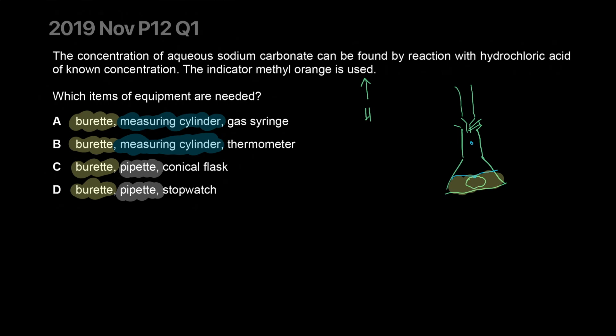The color won't change until all of the sodium carbonate is gone. The sodium carbonate is aqueous - it's a solution, not a solid chunk. You keep adding acid until no more carbon dioxide is produced, meaning all of the carbonate has reacted. Then the next drop of acid will change the color of the methyl orange.